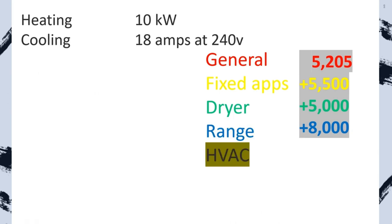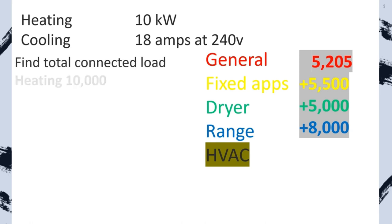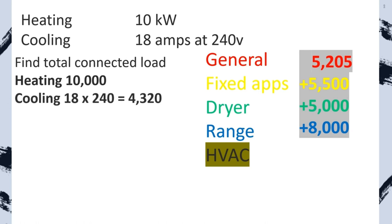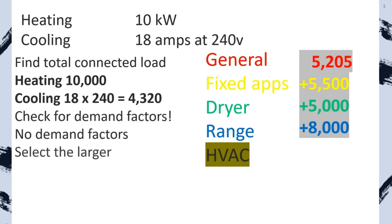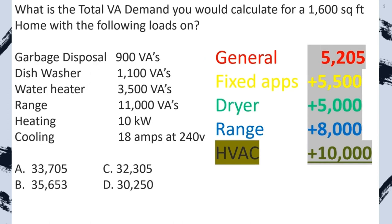For HVAC VAs: take the larger of heating or cooling. Heating is 10,000 VAs; cooling is amps multiplied by volts equals 4,320 VAs. No demand factors on this portion — select the larger: 10,000. Now total everything together: 5,205 plus 5,500 plus 5,000 plus 8,000 plus 10,000. Push equals between each addition to avoid calculator errors, and always double-check your answer. We end up with 33,705 and select A.